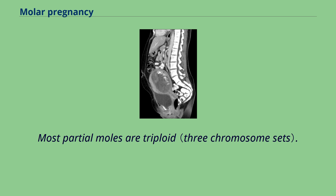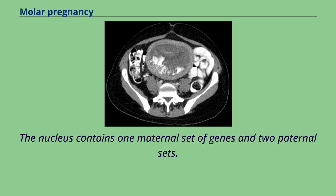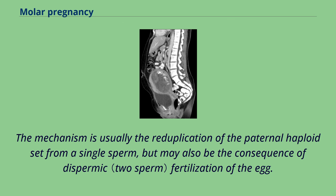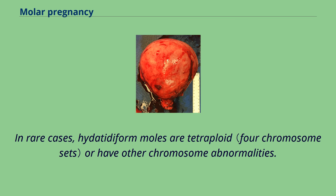Most partial moles are triploid. The nucleus contains one maternal set of genes and two paternal sets. The mechanism is usually the reduplication of the paternal haploid set from a single sperm, but may also be the consequence of dispermic fertilization of the egg. In rare cases, hydatidiform moles are tetraploid or have other chromosome abnormalities.